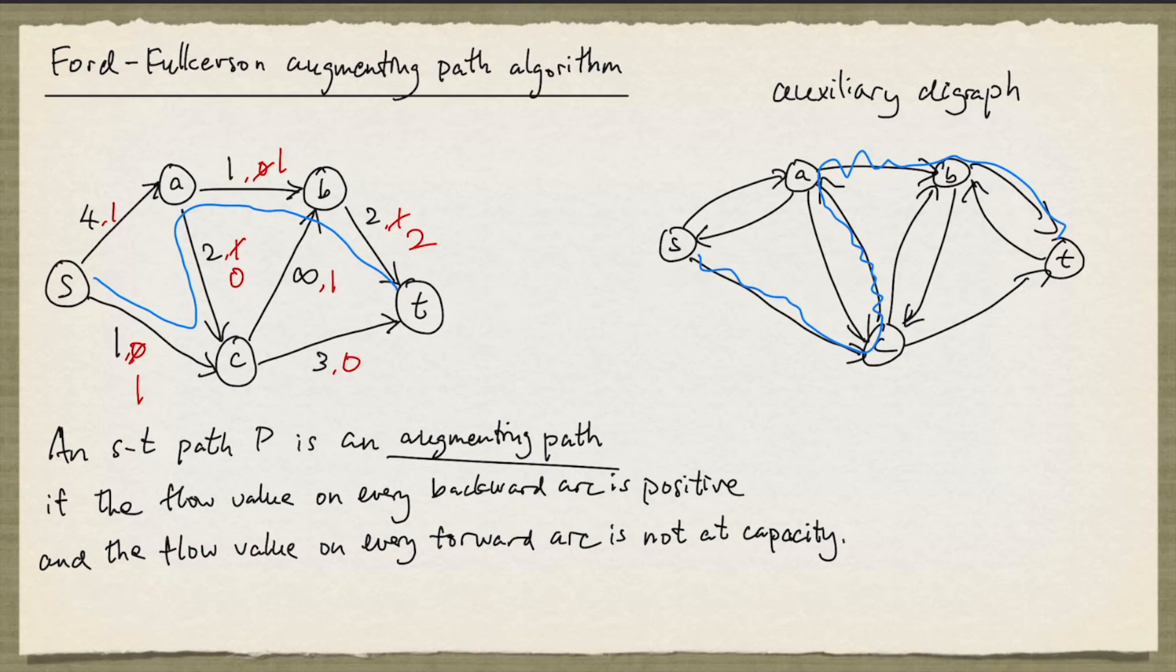It is possible to remove the rational capacity assumption by simply finding the shortest path in the auxiliary digraph every time. So in this case, we would take this path instead of the blue s-t path, because this is the shortest path.